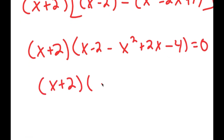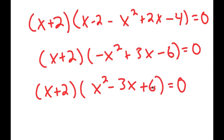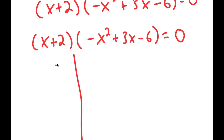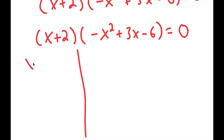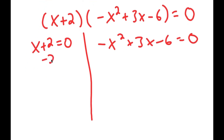Which is equal to x plus 2 times negative x squared plus 3x minus 6 is equal to 0. This gives me two equations: x plus 2 is equal to 0, and negative x squared plus 3x minus 6 is equal to 0. So for x plus 2 equals 0, I can subtract 2 on both sides and I get x is equal to negative 2.